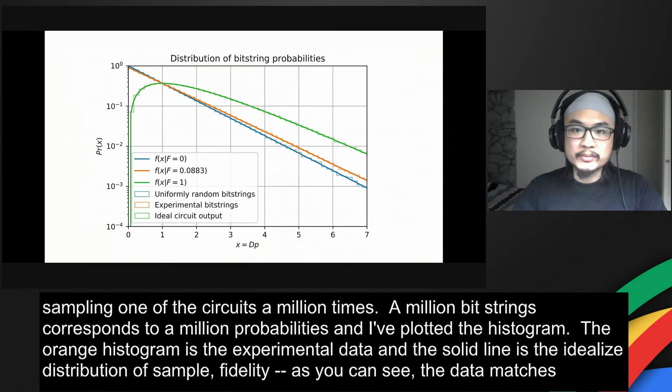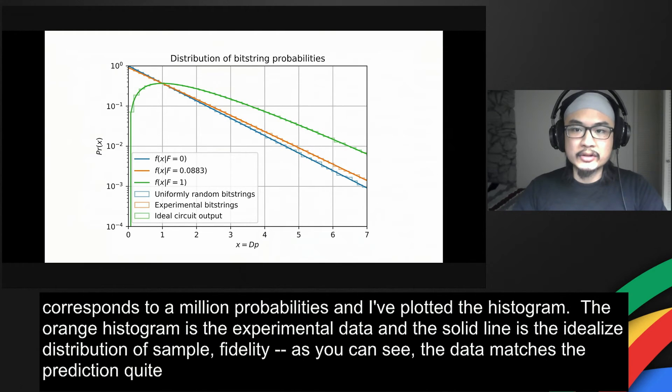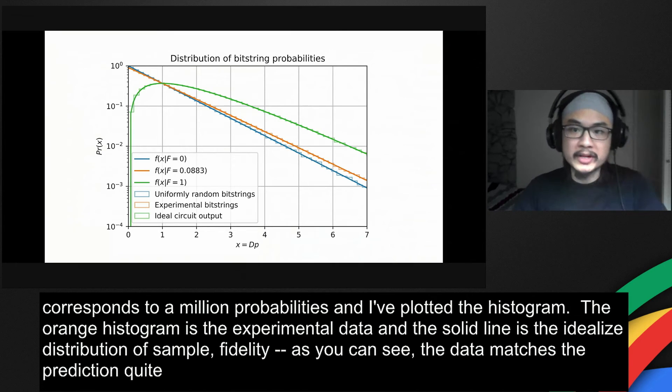The green and blue histograms are from simulations. The green is fidelity one, and blue corresponds to uniformly random bit strings.